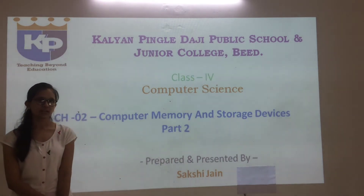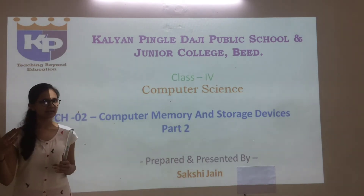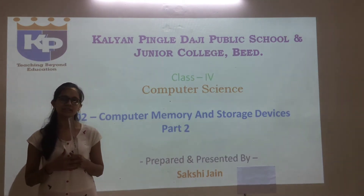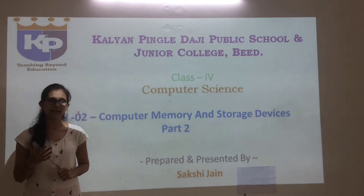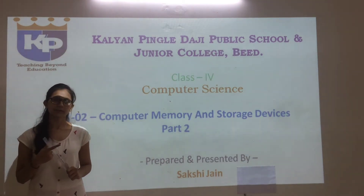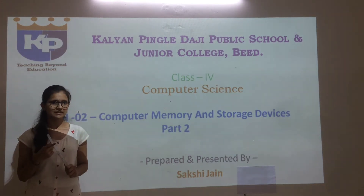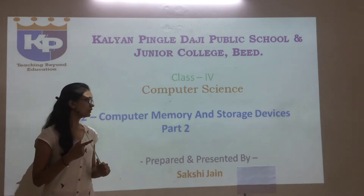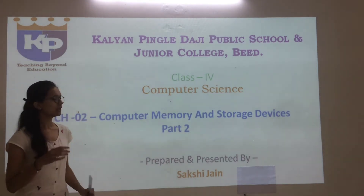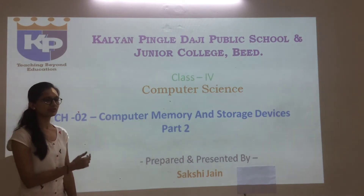What have you seen in the first part? What is primary memory and secondary memory? Primary memory has two parts: ROM and RAM. ROM means read only memory, RAM means random access memory. ROM is permanent storage and RAM is temporary memory. Today we learn part 2: computer memory and storage devices.